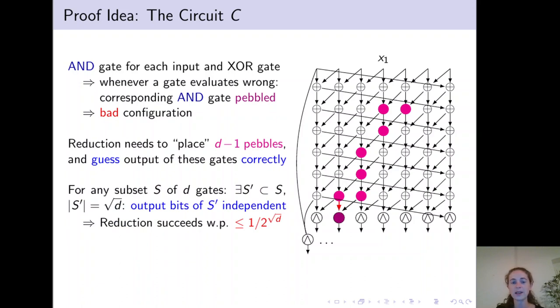However, for any subset of D gates in this XOR circuit, there exists a subset of square root of D gates such that their output bits are independent. And actually this bound is optimal. For example, if you would place all these pebbles in a square, then indeed you could only find a square root of the number of pebbles that have independent output bits. This implies that the reduction succeeds with probability at most 1 over 2 to the square root of D.